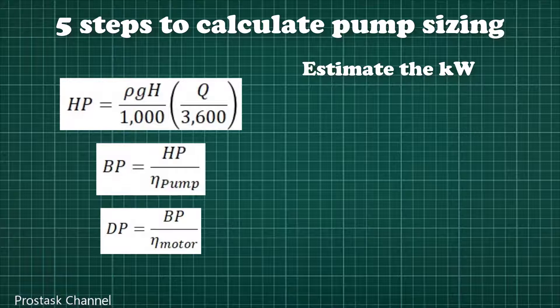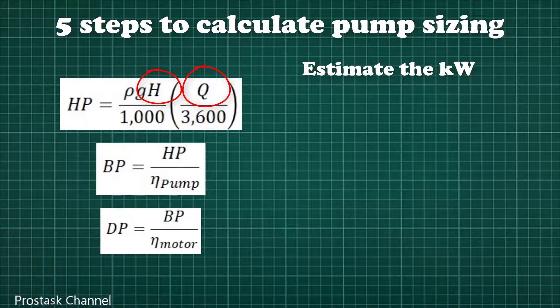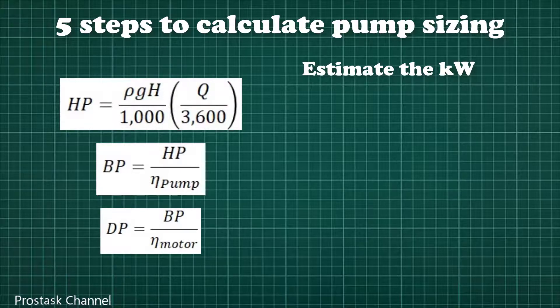It can be calculated from total differential head and design flow rate. Then you have to convert unit to power unit. Brake horsepower or brake shaft power or BP is the required power that pump needed. It means this value is dependent on pump type.